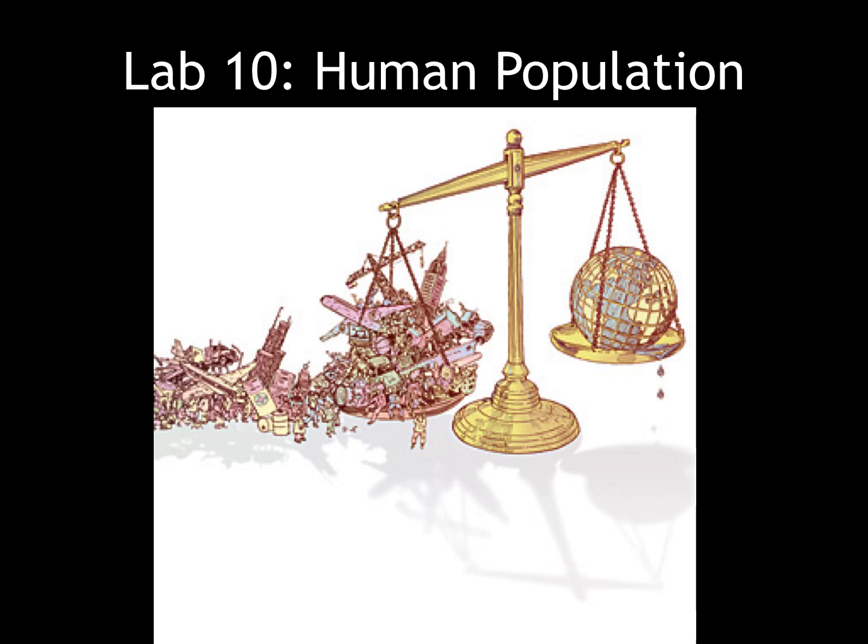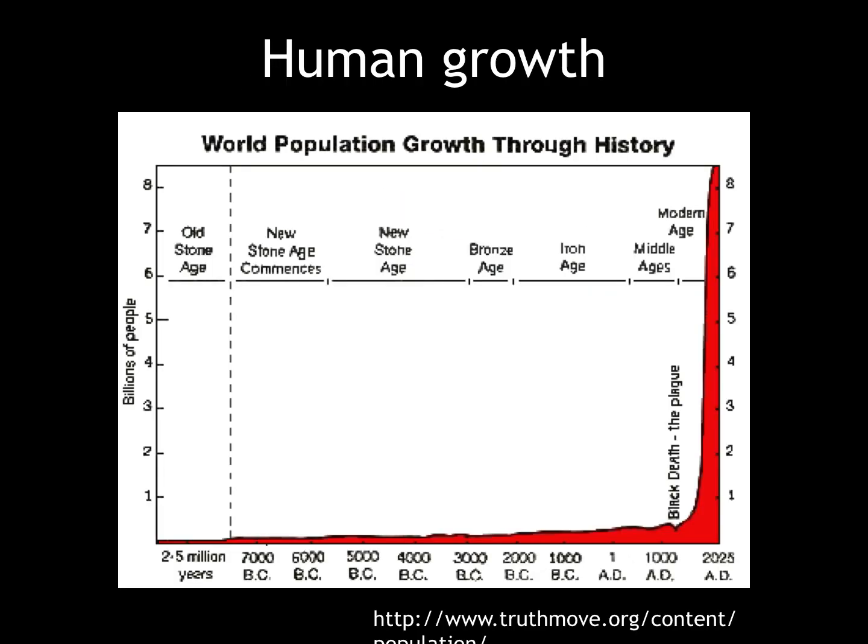Hi all, welcome to Lab 10. This week we'll be discussing human population. This figure shows world population growth through history. It's obvious that we've had a large spike in population in the modern era. Major population jumps occurred with the advent of tools, agriculture, and industry.